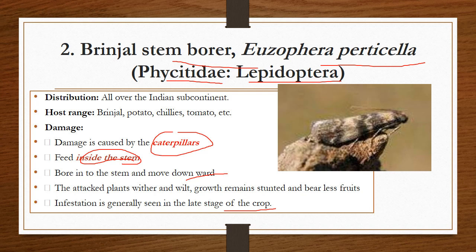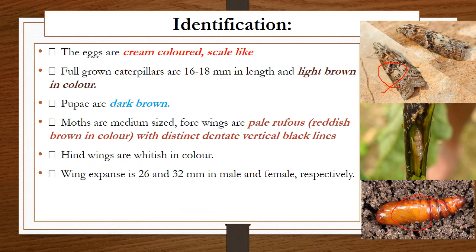The attacked plant withers and wilts, remains stunted, and produces fewer fruits. The infestation is generally seen in the last stage of the crop, that is, during maturation. Coming to identification: the adult lays creamy-colored scale-like eggs. The caterpillars are light brown in color, 16 to 18 mm in length. The pupa is dark brown in color, and the moth is reddish-brown (pale rufous color) with distinct dentate vertical block markings. The forewings are whitish and the wing expansion is 26 and 32 mm in males and females respectively.